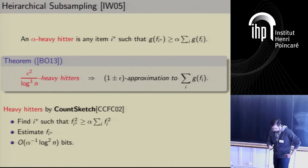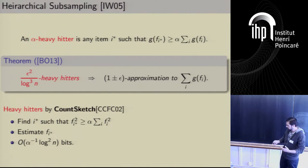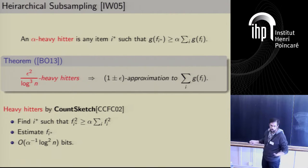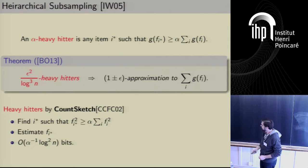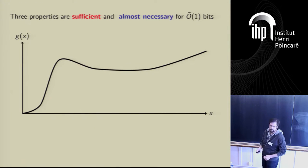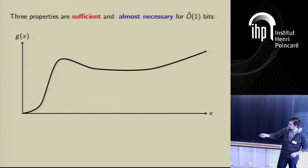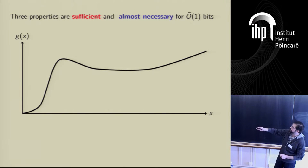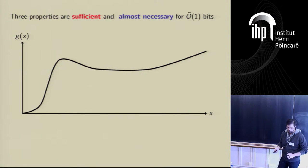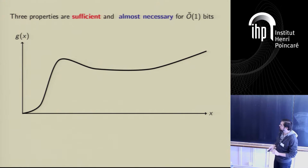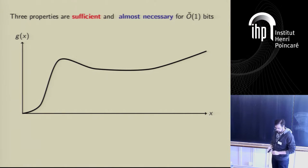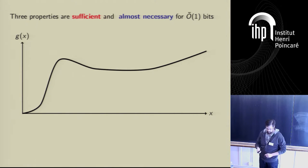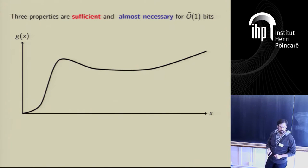So we know how to find F2 heavy hitters, and what we want to find are g heavy hitters. As we go along, I'll explain why these three properties help us find heavy hitters. Here's my generic function g — it starts at zero, increases, decreases a little, then increases some more. I'll tell you three properties that are sufficient for a polylogarithmic space approximation algorithm, and almost necessary.